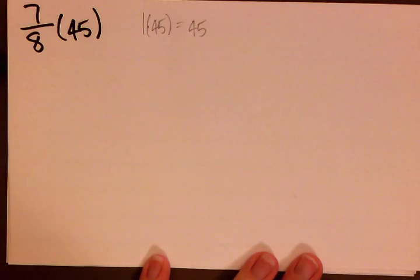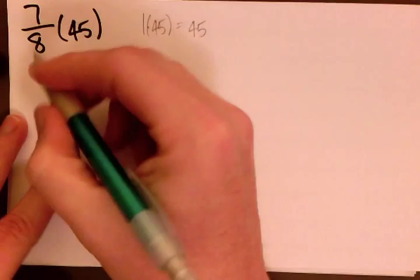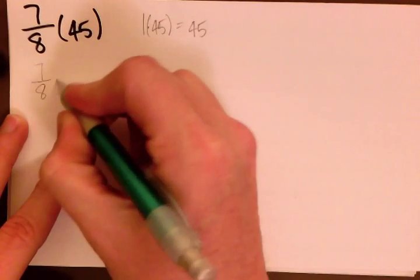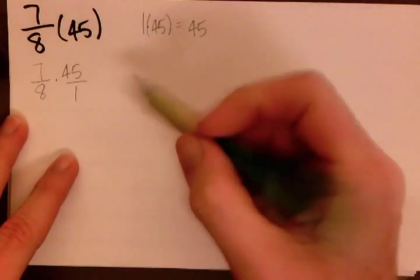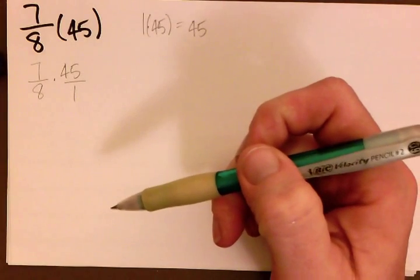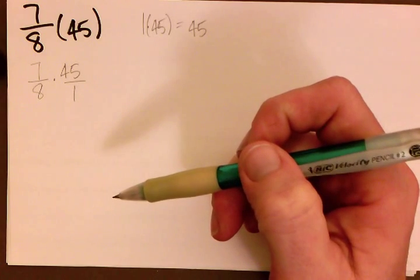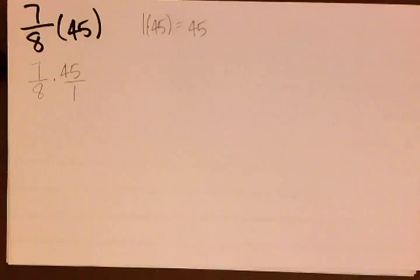Now we want to go ahead and do the exact multiplication. The first thing we want to do is turn 45 into a fraction so that we can have a fraction being multiplied by a fraction. When we do, we know that 45 is 45 over 1. Now we want to factor out all of these numbers to see if there is anything that we can reduce or simplify.